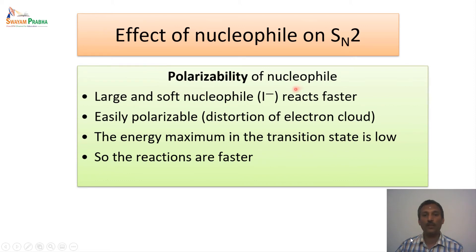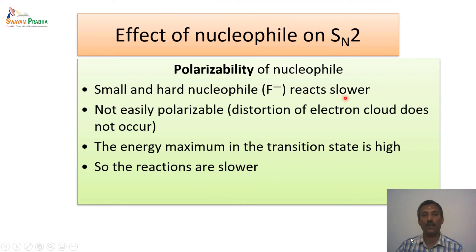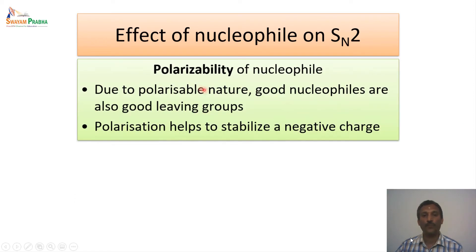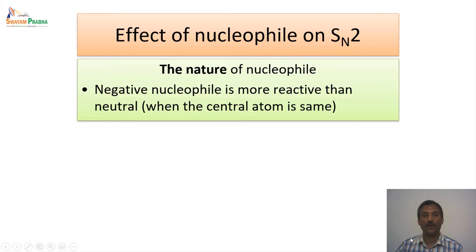When we talk about the polarizability of the nucleophile, large and soft nucleophiles — for example, the big size of iodine — react very fast because they are easily polarizable. The distortion of the electron cloud is very important for nucleophilic substitution to occur. In this particular case, the energy maximum of the transition state is very low, so the reaction occurs very fast. On the other side, small and harder nucleophiles react slower because they are not easily polarized. According to the HSAB principle also, we can explain the same: the energy maximum in the transition state is very high for the small and harder nucleophiles. Due to the polarizable nature, good nucleophiles are also good leaving groups because polarization helps to stabilize the negative charge.